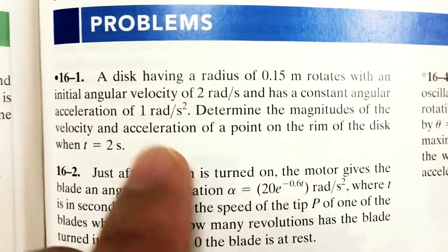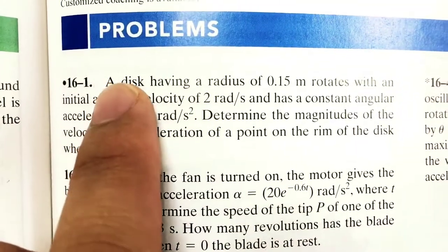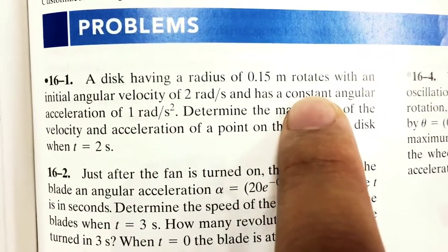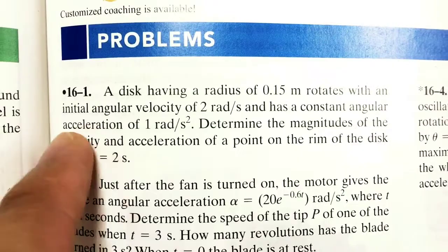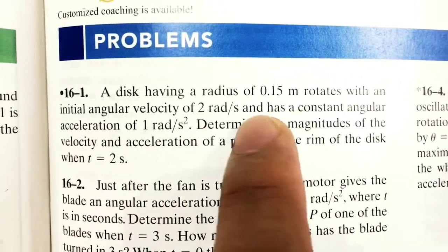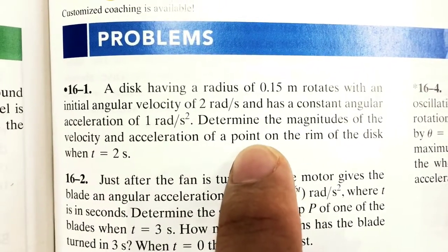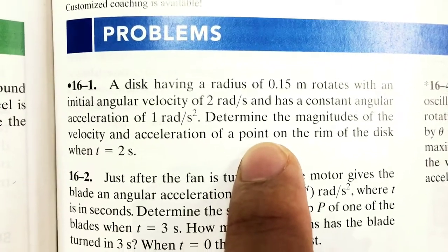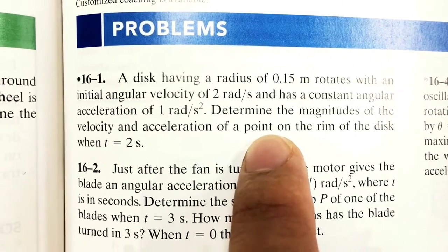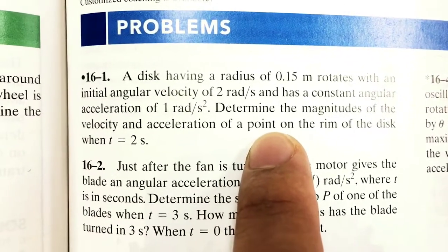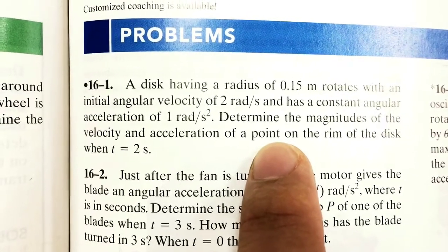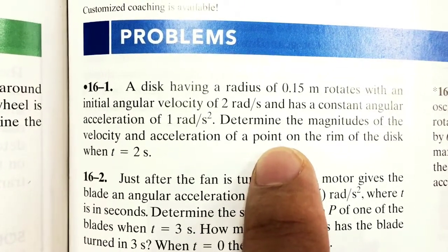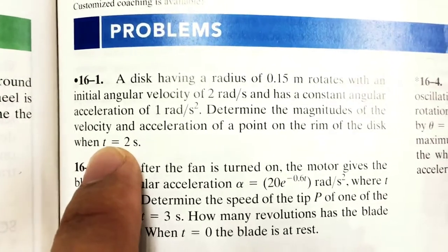In this problem, we are dealing with a disk which has a radius of 1.5 meter, rotates with an initial angular velocity of 2 radian per second and has a constant angular acceleration of 1 radian per second squared. So we have angular velocity, we have constant angular acceleration — determine the magnitude of the velocity and acceleration of a point on the rim of the disk when t equals 2 seconds.